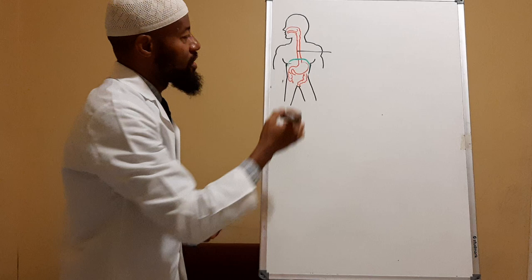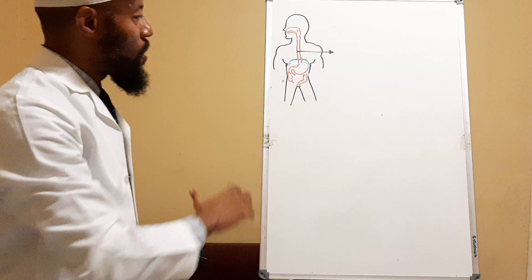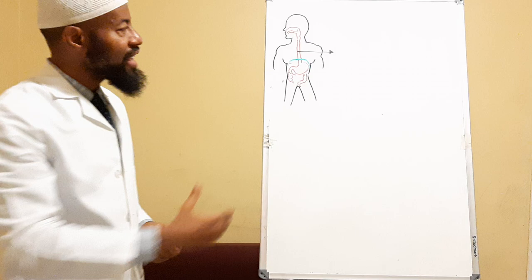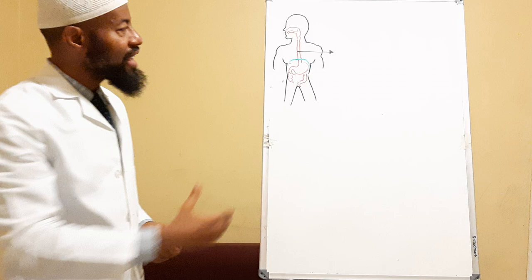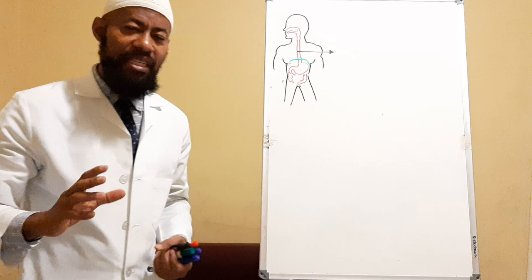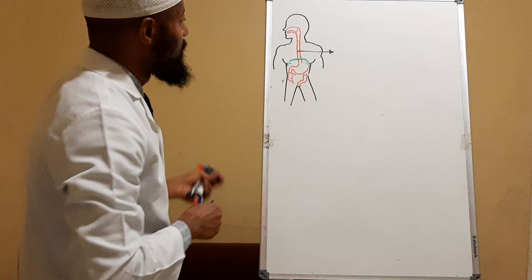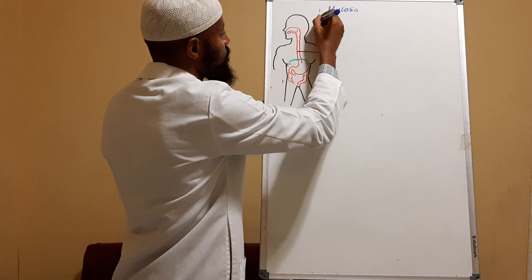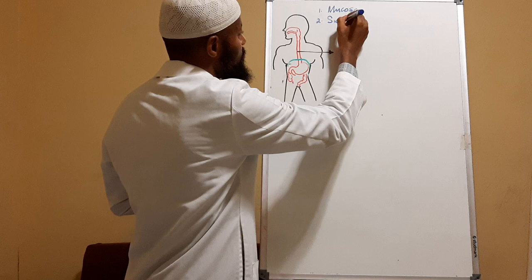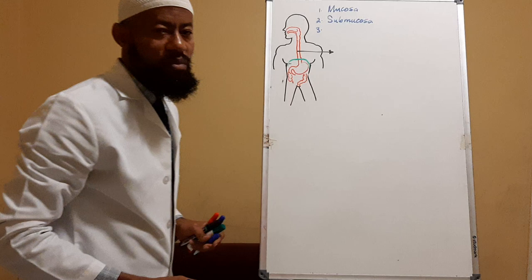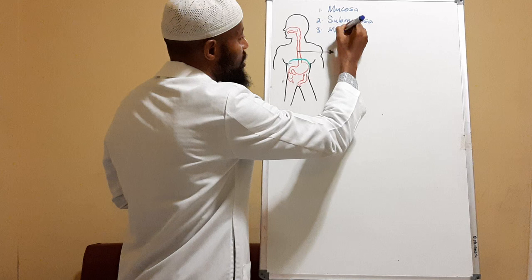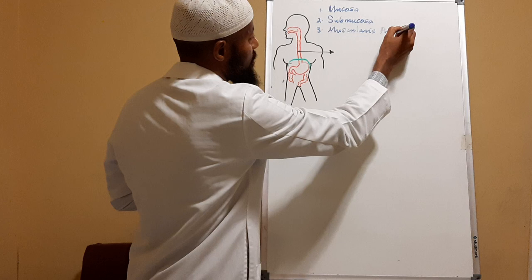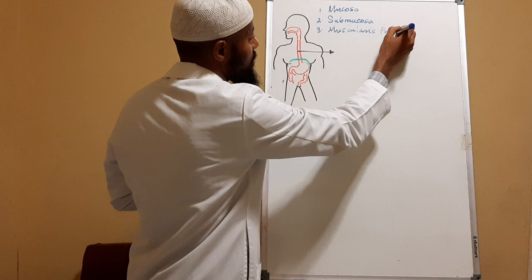We're taking a cross-section of any part of the gastrointestinal tract extending from the oral cavity down to the anal canal. We'll see that it has four basic layers. Number one is the mucosa. Number two is the submucosa. Number three is the muscularis propria. And number four is the adventitia. We're going to look at each one of them.